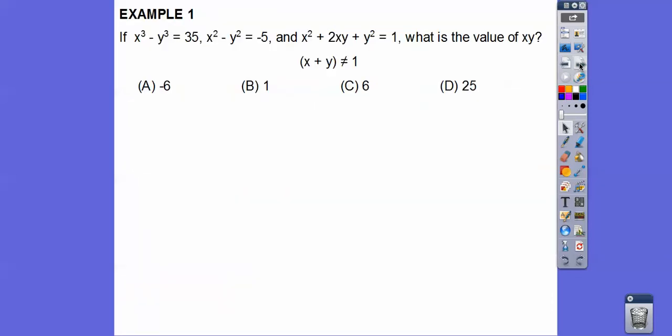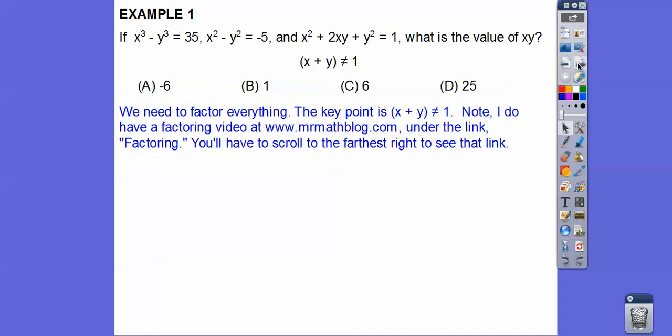All right, so if x cubed minus y cubed equals 35, x squared minus y squared equals negative 5, and x squared plus 2xy plus y squared equals 1, what's the value of xy? And then they state this: x plus y does not equal 1. This has factoring smelling all over that, you guys. So we need to factor everything, you guys. And the key point is x plus y doesn't equal 1. So when we get one of them to be 1, we disregard that 1.